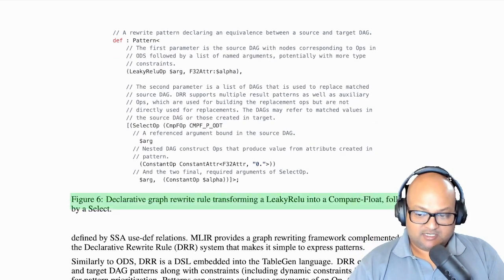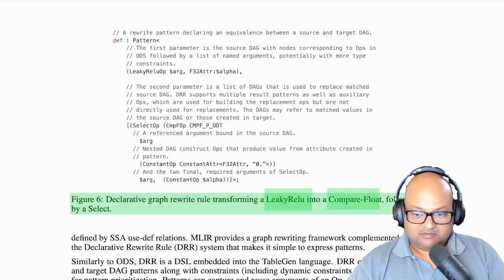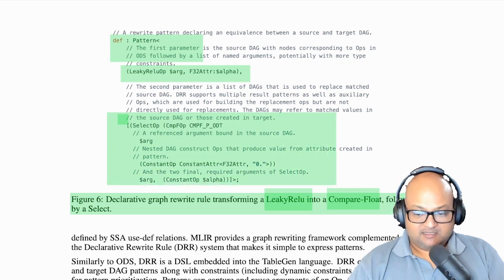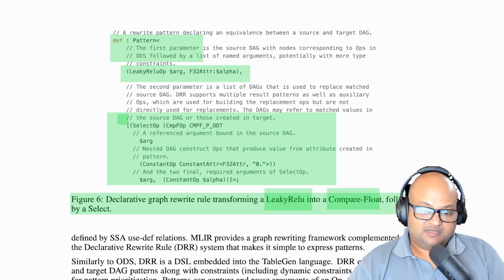An example is over here, which transforms a ReLU operation, a very frequently used construct in machine learning, into a compare float. And this purely looks at patterns within the control flow graph and then rewrites certain ops in terms of certain other ops. And this reduces something that would have been a very complex piece of code down to a simpler declarative configuration.